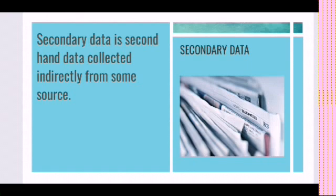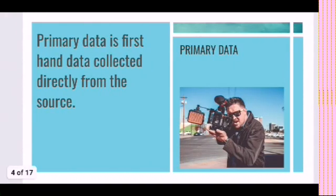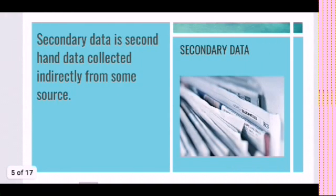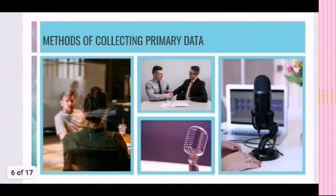For example, if you are directly interviewing a person to collect certain information then that is primary data. But if you are referring to some other source such as books, magazines, or any other printed media in order to collect the data, then it is a secondary source because it has already been collected by somebody else.